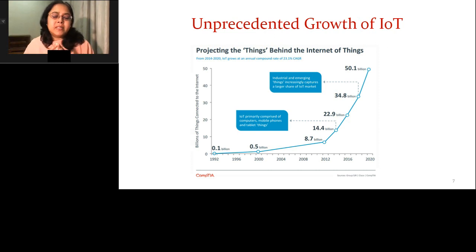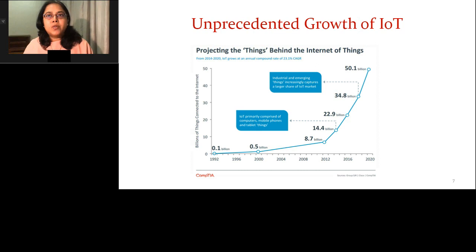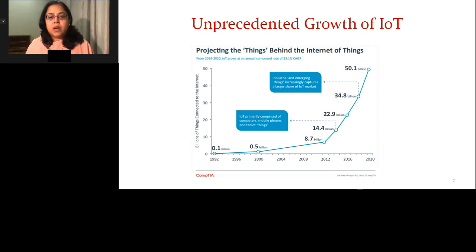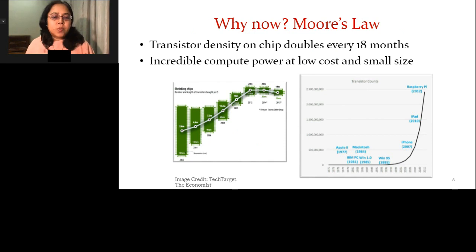Now, why is this happening now? There has been a dramatic increase in the number of IoT devices across the world in recent years. For a while, IoT meant your mobile device or tablet. But today it has been taken over by factory automation and all other kinds of IoT devices. Today, you have almost 50 billion IoT devices in the world. Why such an explosion in numbers?